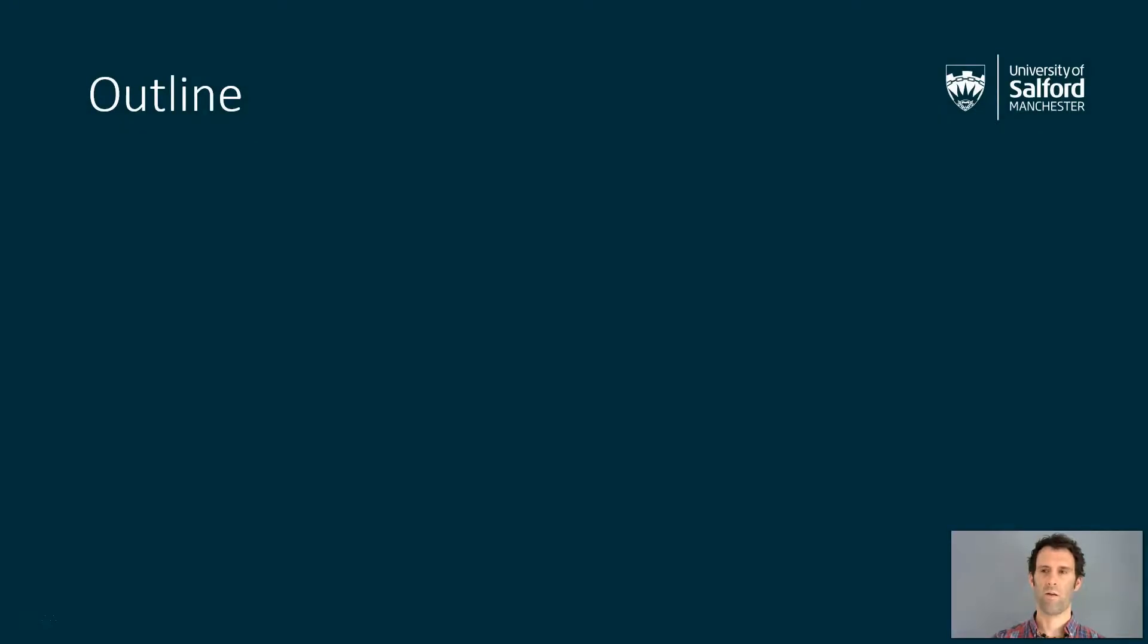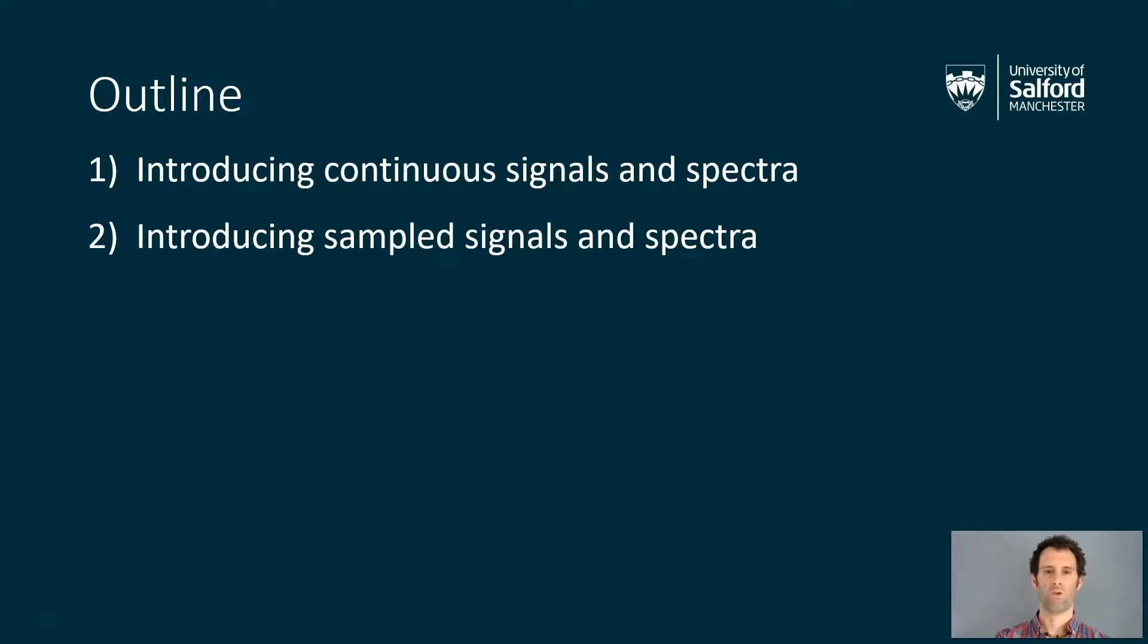So a quick overview of all the topics and outline. First of all, in the first one, we're going to introduce continuous signals and spectra. We're going to talk about what a signal is, what a spectrum is. We're going to talk about some simple signal statistics, such as mean and RMS. Then we're going to introduce sampled signals and spectra. We're going to talk about their representation in computers using arrays, mean and RMS again, and how you might compute things like derivatives as differences between samples or integrals as sums of samples.